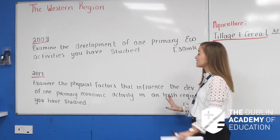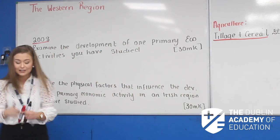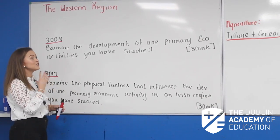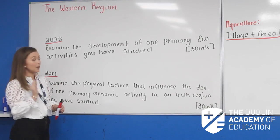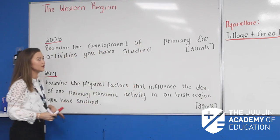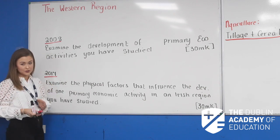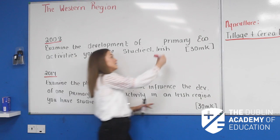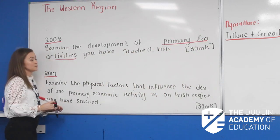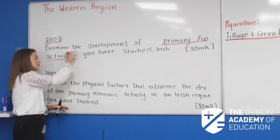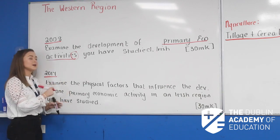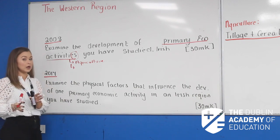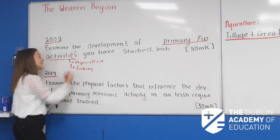We're going to focus on page number 11. I'm going to get you first to go down to the last question — the 2008 question. It asks us to examine the development of primary economic activities you have studied, in relation to an Irish region. Circle the S on 'activities' — they're looking for more than one. The primary economic activities we're going to look at are agriculture and fishing in the western region.